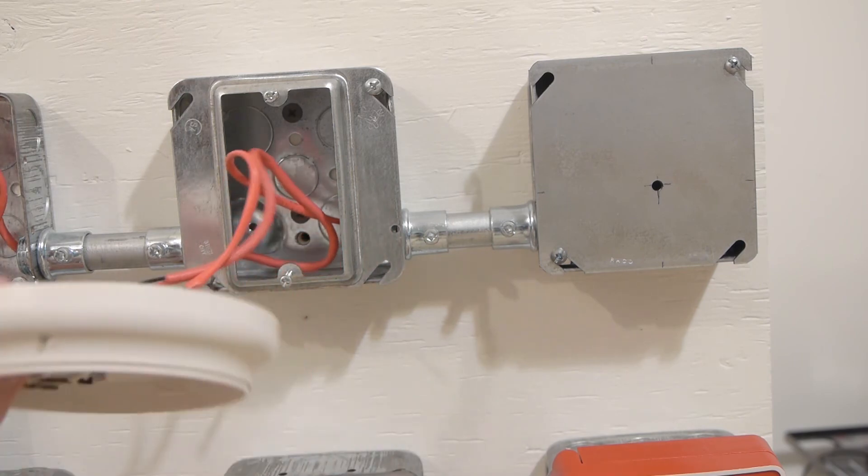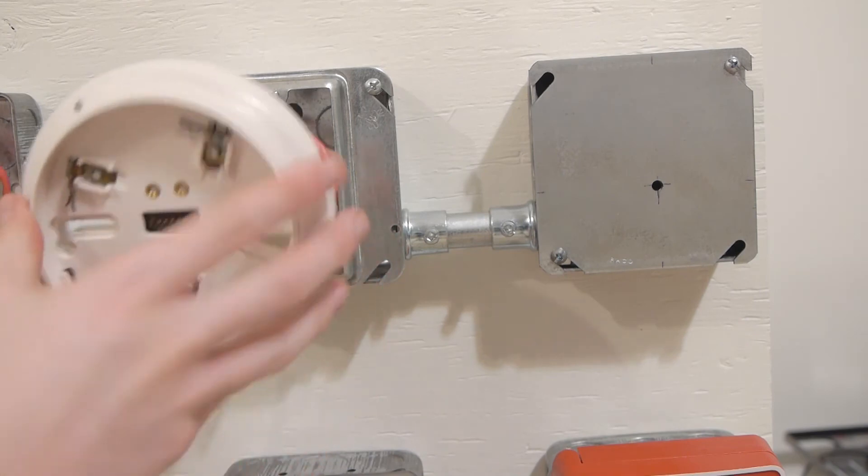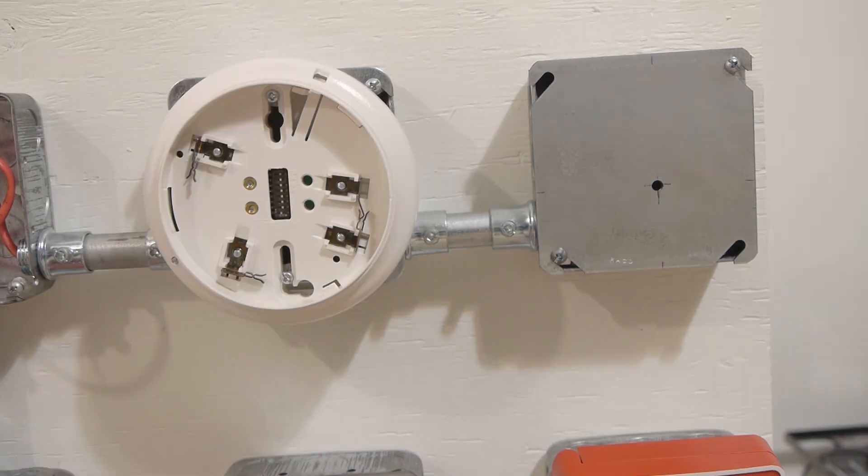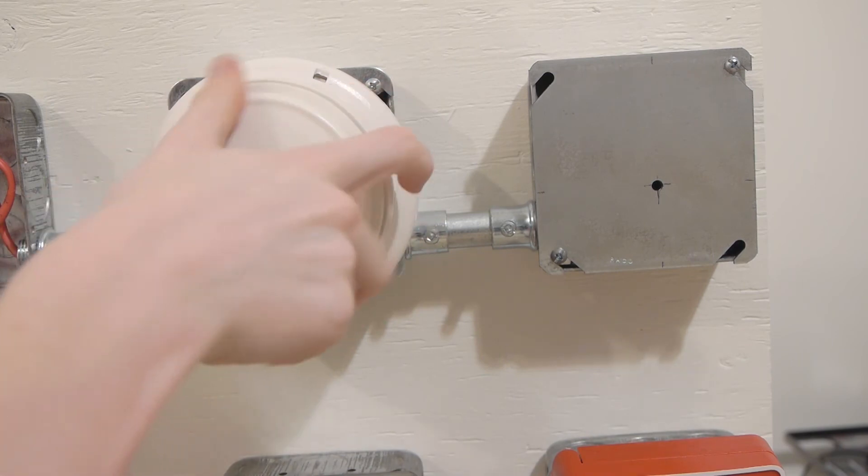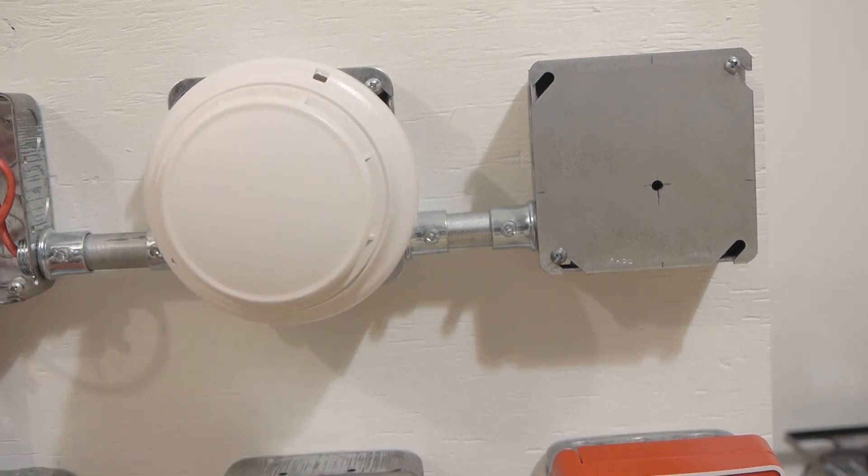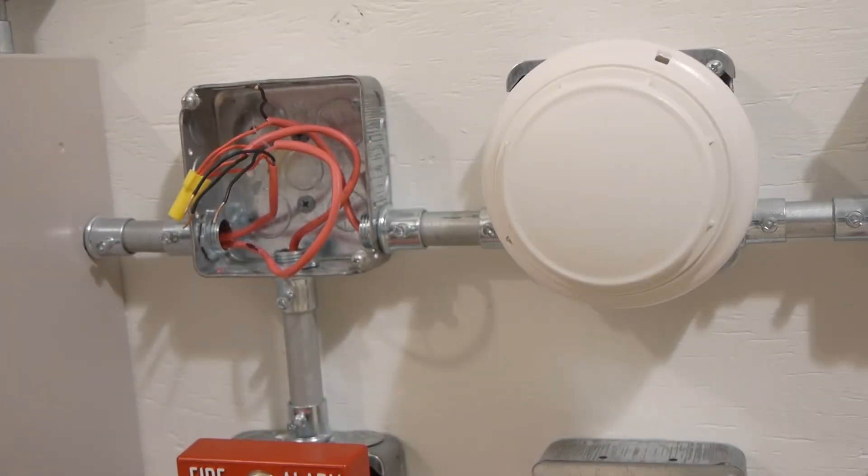So now that we have cleared the ground fault, we can go ahead and put this detector base back together. Now the detector base is put back together, go ahead and put the head back on, and now we can put the T-tap back together.